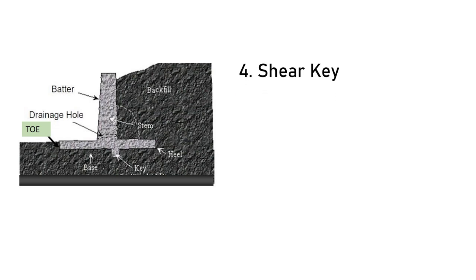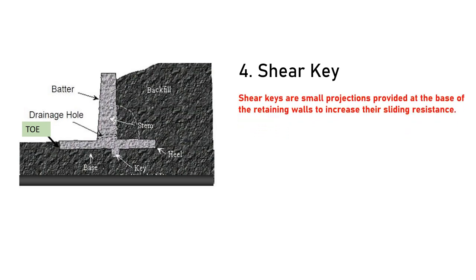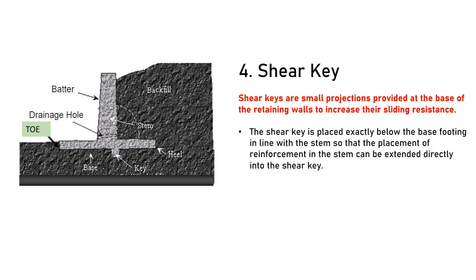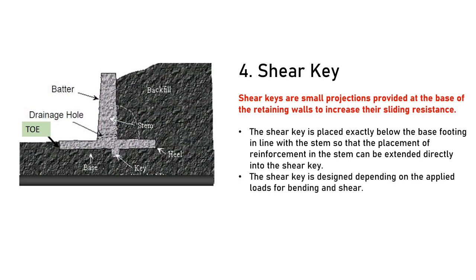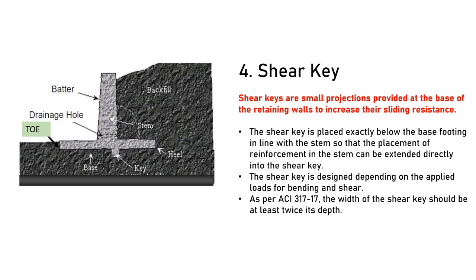Number 4 is the shear key. Shear keys are small projections provided at the base of the retaining wall to increase sliding resistance. The shear key is placed exactly below the base footing in line with the stem, so that the reinforcement in the stem can be extended directly into the shear key. The shear key is designed based on the applied loads for bending and shear. As per ACI 317, the width of the shear key should be at least twice its depth.